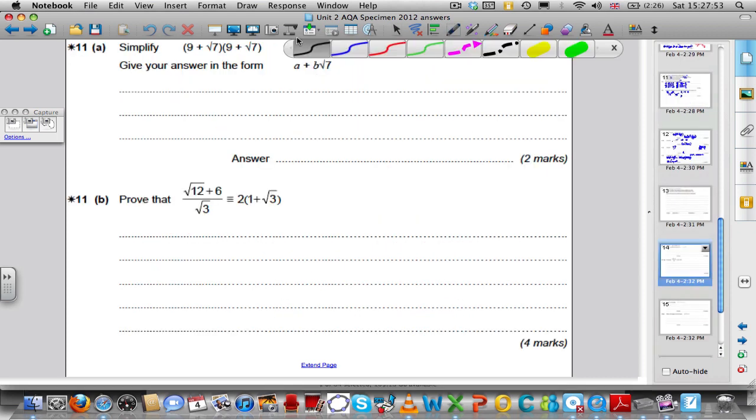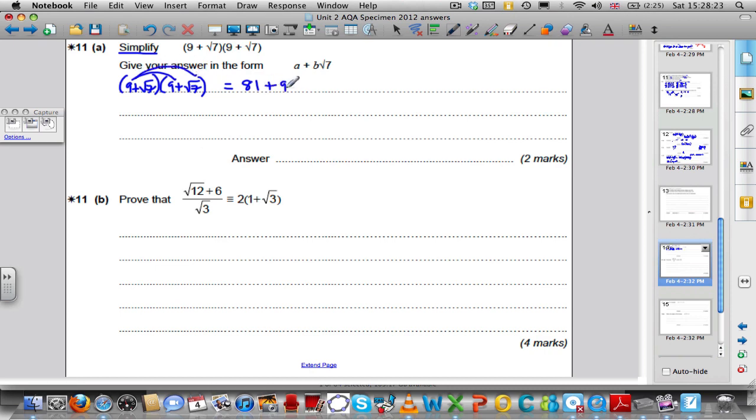In 11, this is a search question and asks you to simplify bracket 9 plus root 7 multiplied by bracket 9 plus root 7. So this is just simply expanding two brackets with two terms in each. So we're doing 9 plus root 7 multiplied by 9 plus root 7. 9 times 9 is 81. 9 times root 7 is 9 lots of root 7. Root 7 times 9 is again 9 lots of root 7. And root 7 times root 7 is root 49, which is simply 7. Collecting like terms, 81 plus 7 is 88. 9 root 7 plus 9 root 7 is 18 lots of root 7.